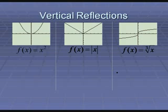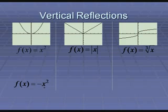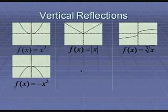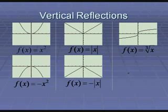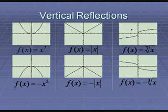Vertical reflections flip the graph up and down across the x-axis. Anytime a transformation affects up and down, it's applied to the entire function, not just x. A negative in front of the whole function — like negative x squared — flips it across the x-axis. For absolute value of x, a negative out front gives f(x) = negative absolute value of x, flipping it down. The cube root of x with a negative out front flips it: what was down is now up, and what was up is now down.